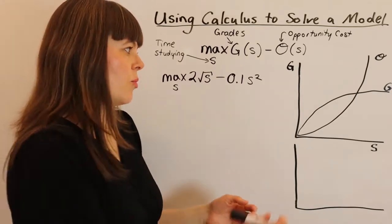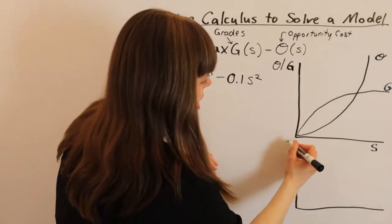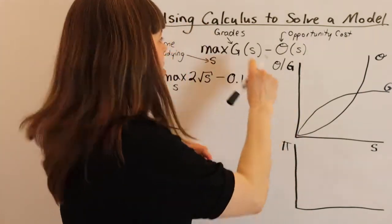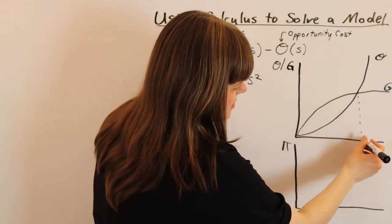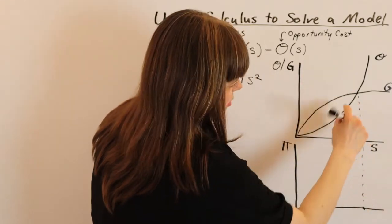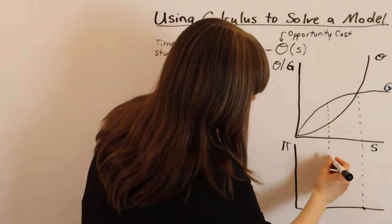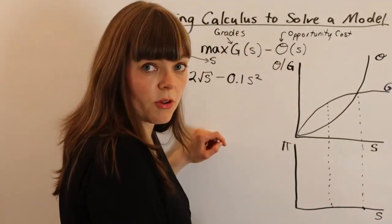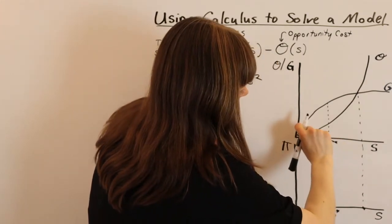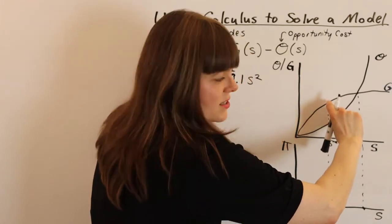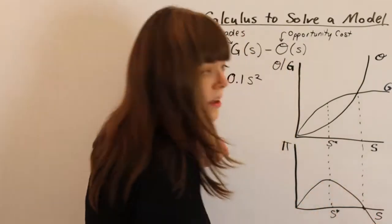Now we know we're trying to optimize, so we can draw out our total payoff function, where pi represents the total objective function - that's just the difference between these two. We know the difference is 0 at this point, benefit minus cost is biggest in the middle, so we know that's when we're going to have our optimal s. Our total payoff function gets bigger and bigger until it reaches this point, and then it gets smaller and smaller after that.